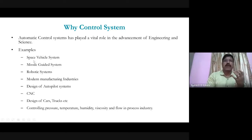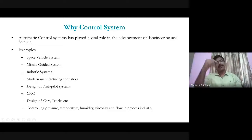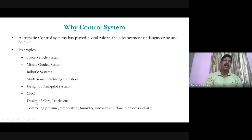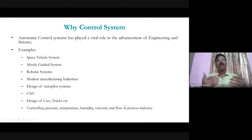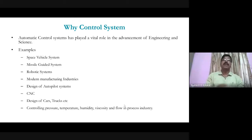There are several examples around us where we control parameters. For controlling any parameter you need a system, and that system is called a control system. Applications include space vehicles, missile guidance systems, robotic systems, modern manufacturing, autopilot design, CNC machines, vehicles, and process industries controlling pressure, temperature, humidity, viscosity, and flow.